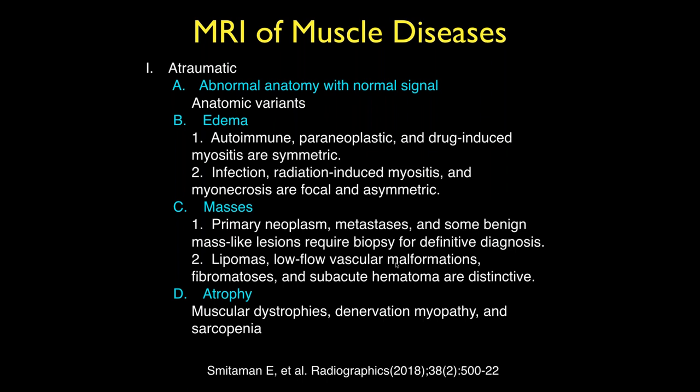You can also get lipomas, vascular malformations, fibromatosis, fibrous tissue, and acute hematomas. Then there are atrophies — muscular dystrophies, denervation myopathy, sarcopenia, which is diffuse muscle fatty atrophy primarily in older individuals. It's probably mostly related to disuse atrophy, or what I call 'couch potato-itis.'